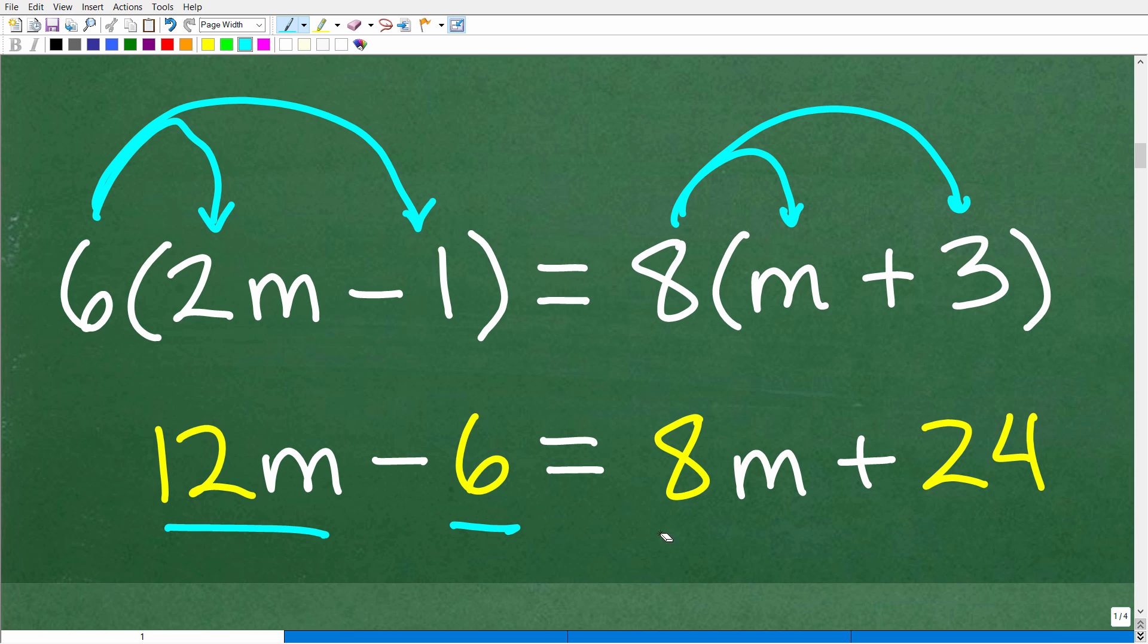So the distributive property is kind of one of these areas where a lot of students, typically, beginning algebra students make a lot of mistakes. I'll tell you, after grading maybe 10 million different homework, quizzes, et cetera, well, maybe not that many, but you get the idea. I've seen so much math work come my way. I want to tell you what is a very common mistake that I've seen with math students. So they'll go like, oh, six times two, that's 12M, and then they'll just write a one right here. They'll forget to multiply this number to the next term.